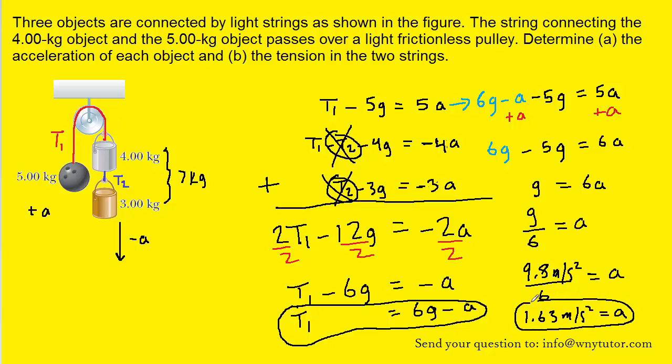Notice that's the acceleration of each object because all of the objects are connected together. So if the bowling ball is accelerated upward by 1.63 meters per second squared then the buckets are also accelerating but downward 1.63 meters per second squared. So each object accelerates by the same rate but just in different directions.